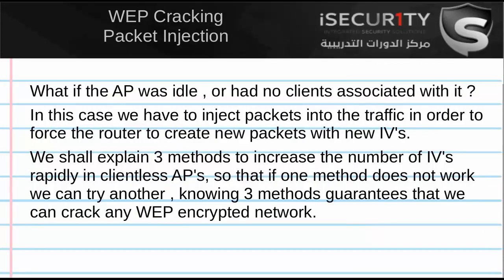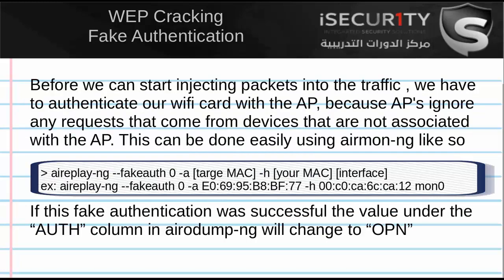What we can do is inject packets into the traffic. When we inject packets, we force the AP to create new packets with new IVs — we capture those IVs and repeat. We'll explain three methods in the next videos. Before injecting packets, we have to authenticate our device with the target AP, because access points ignore packets from devices not connected to them — they won't read any packet we send.